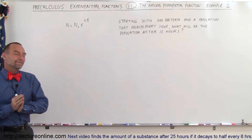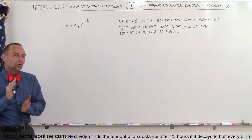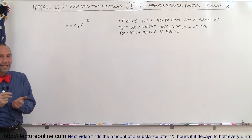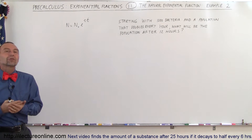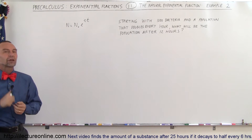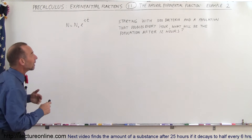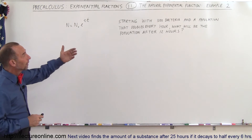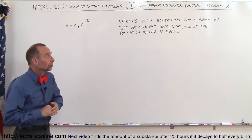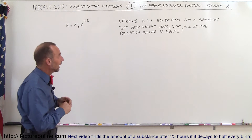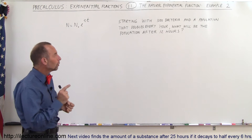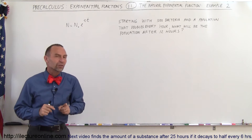Welcome to Electronline. We're going to use the natural exponential function to calculate the growth rate or the ultimate population of something growing exponentially. Let's say we have a culture of bacteria — a thousand bacteria in our culture and the population doubles every hour. What will be the population after 12 hours?